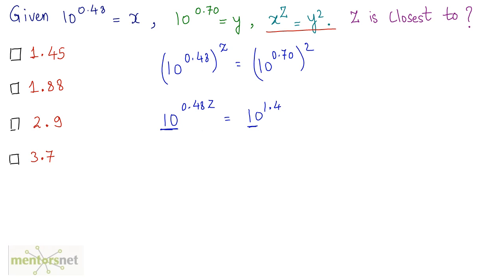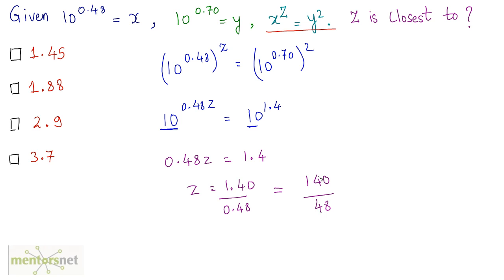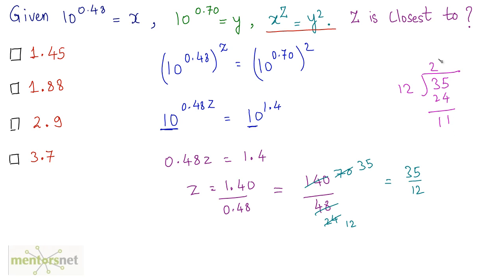Since these numbers are the same, I can equate the powers. So I can write 0.48z is equal to 1.4, therefore z is equal to 1.40 divided by 0.48, which is equivalent to 140 by 48. Dividing the numerator and denominator by 2 gives 70 and 24, and dividing again by 2 gives 35 by 12. Dividing 35 by 12, we get 2 point something, so our answer is closest to option number 3.